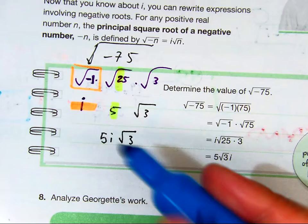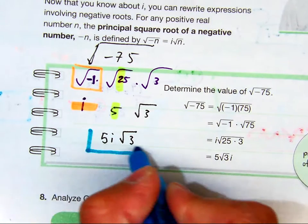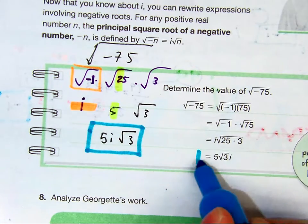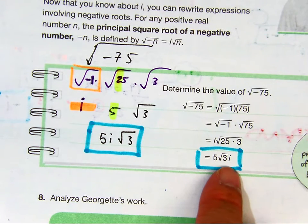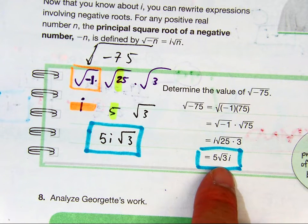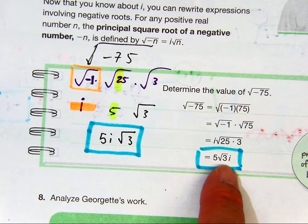Now, you might say, Mr. Aang, your answer does not look like what they have over here. And I will tell you why I prefer mine over theirs. A lot of students will extend the radical sign, and it looks like the i is inside the radical, which would be incorrect.